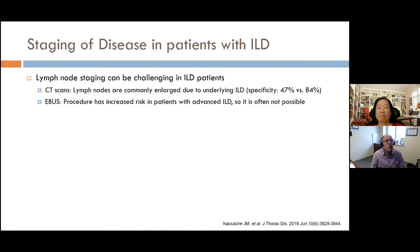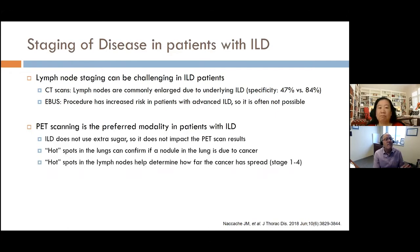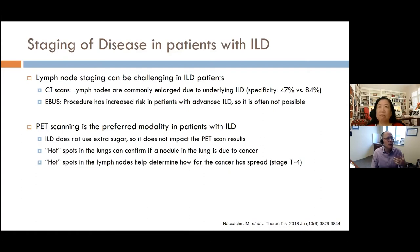EBUS can be very useful, but in really advanced ILD, the bronchoscopy procedure — where you need to be sedated and still for 45 minutes while a camera goes down into the lungs — may be very challenging to do and may not even be safe. Thankfully, PET scans still work really well in ILD patients. Lung fibrosis doesn't use extra sugar — it's just scar tissue and doesn't light up on PET. So if a spot in the lungs looks hot on PET, you know it's cancer, not ILD.